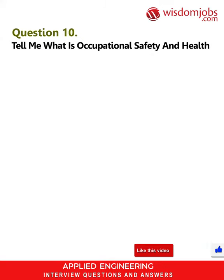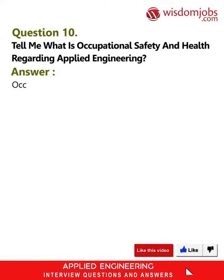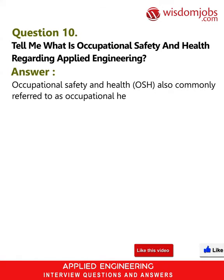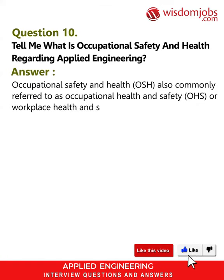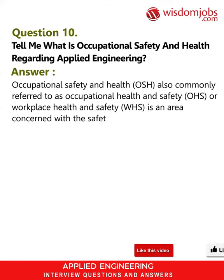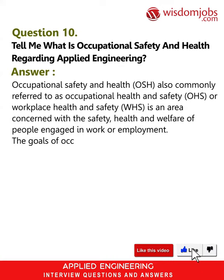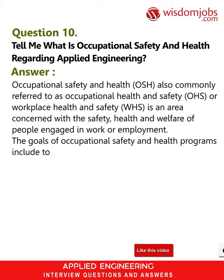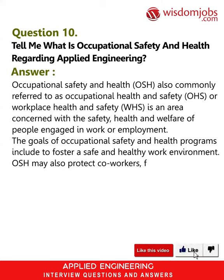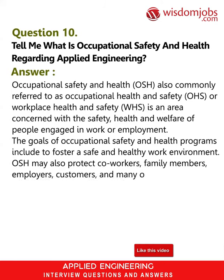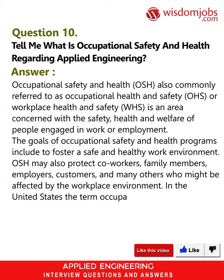Question 10: What is occupational safety and health regarding applied engineering? Answer: Occupational Safety and Health (OSH), also referred to as Occupational Health and Safety (OHS) or Workplace Health and Safety (WHS), is an area concerned with the safety, health, and welfare of people engaged in work or employment. Goals of OSH programs include fostering a safe and healthy work environment, and OSH may also protect co-workers, family members, employers, customers, and others affected by the workplace environment.